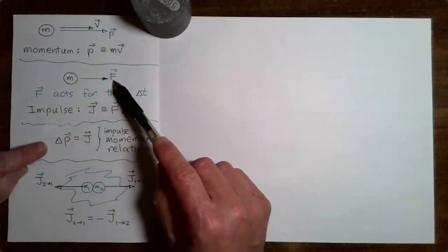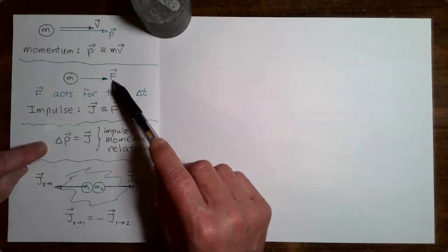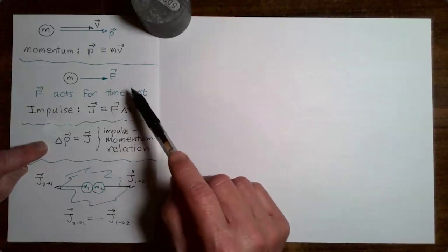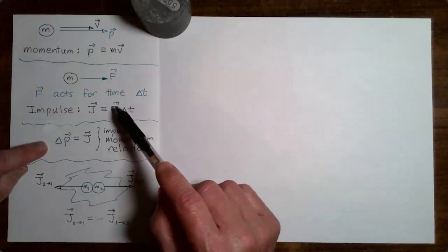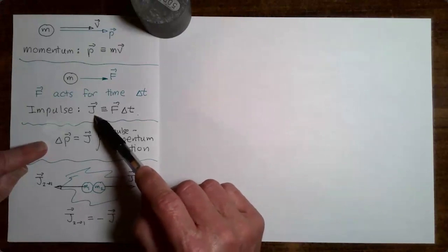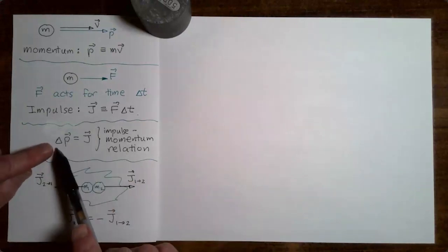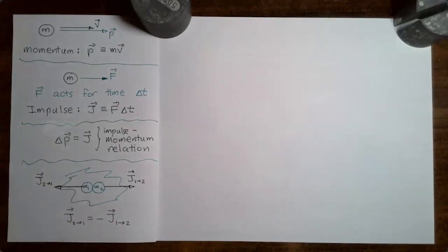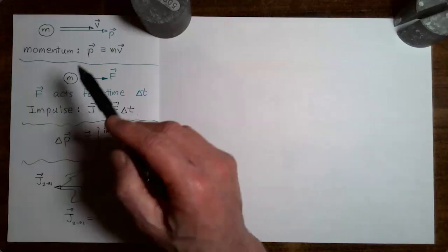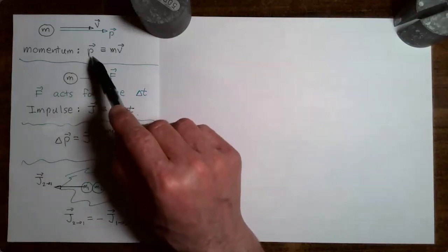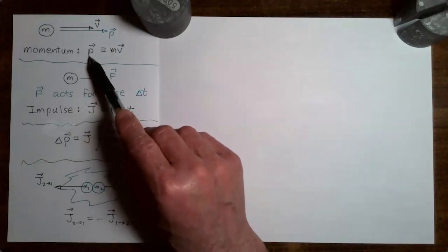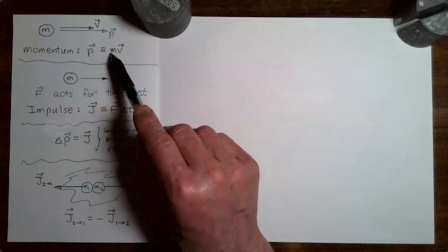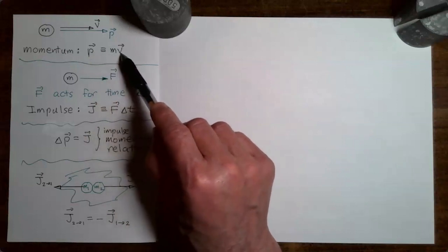The impulse-momentum relation says that if a force acts on an object for some time delta t, therefore delivering an impulse to the object, then the change in the object's momentum is equal to the impulse. The other main idea in this module, which I just introduced in the previous video, is the idea of momentum. Momentum is equal to the mass of an object multiplied by its velocity.